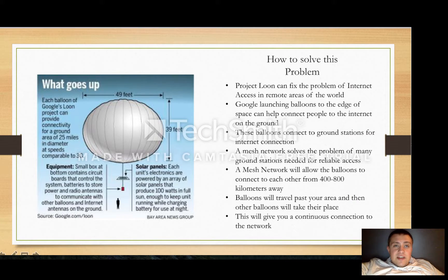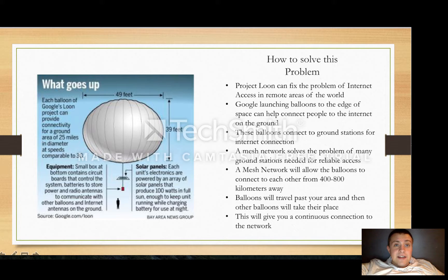Google has a lot of concepts needed to fix this internet access problem. To the left there's a diagram. It has equipment, a circuit box, and solar panels that will keep it powered up. Project Loon is basically giving remote access users internet. Google launches these balloons to the edge of space to help connect people to the ground connection. There are a lot of ground stations involved, and that would be a problem for Google — there would be a lot of ground stations that would cost a lot of money to build.